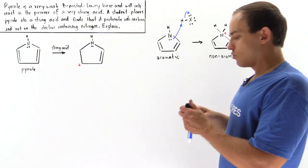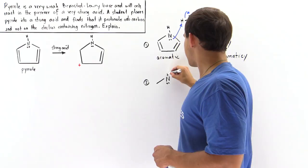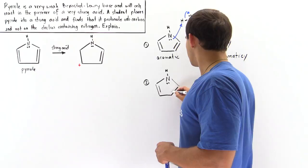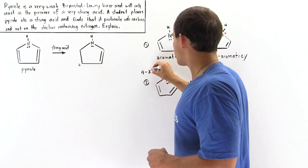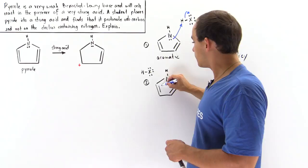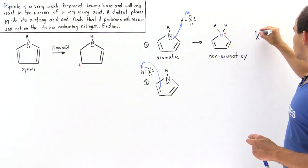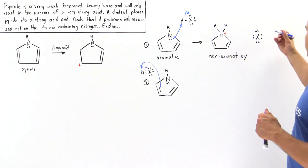Now let's examine the actual reaction mechanism for carbon protonation. We have the nitrogen with its lone pair of electrons and the rest of the pyrrole molecule. In this step, the two electrons in a pi bond grab the H atom from the acid, kicking off the sigma bond and placing those two electrons onto the conjugate base. We also form the conjugate base of the strong acid, which carries a negative charge.